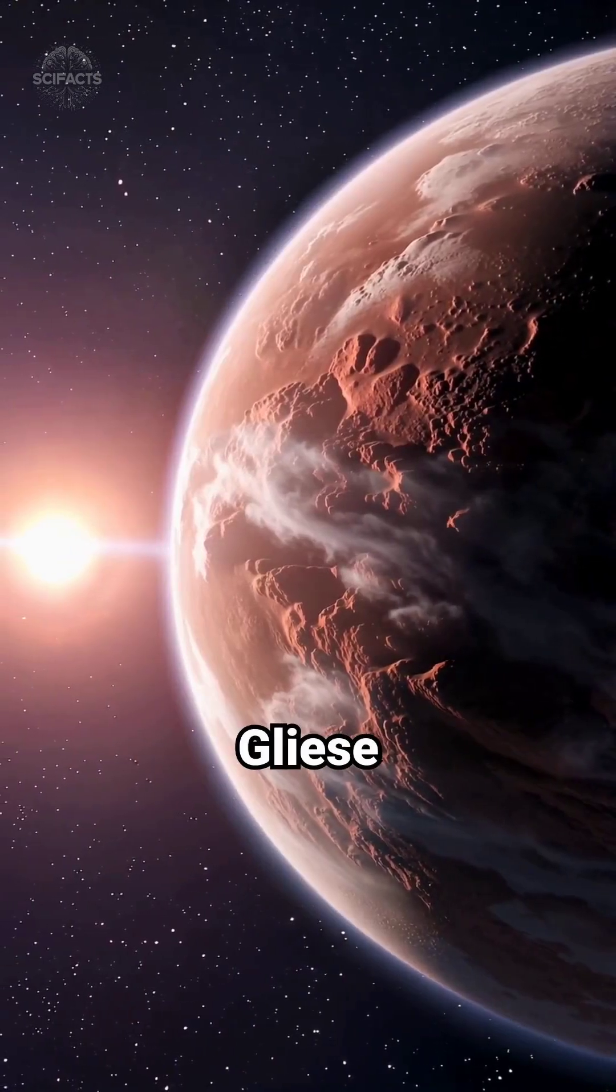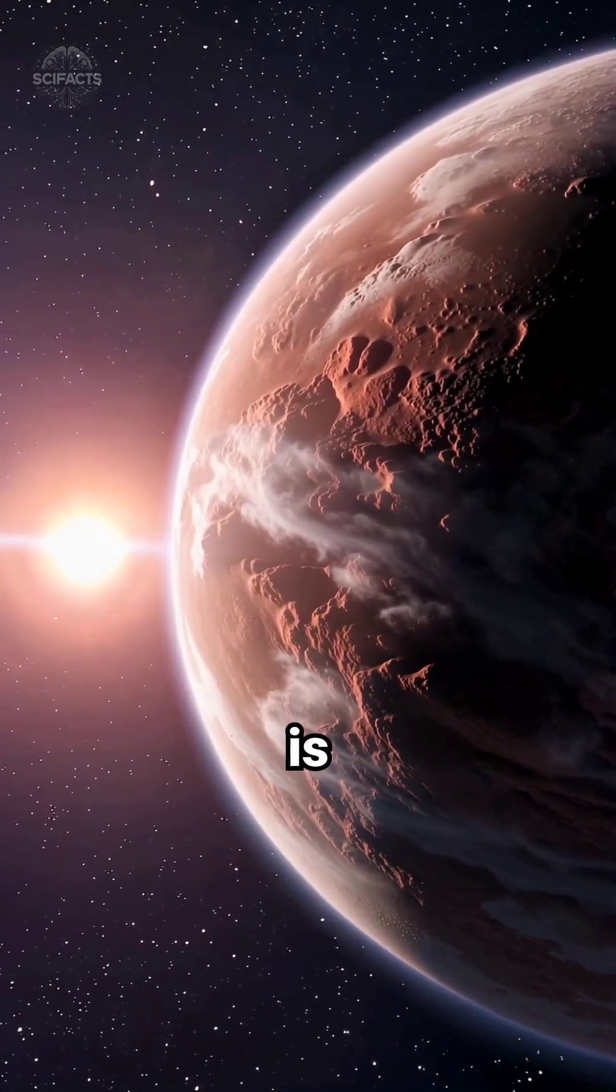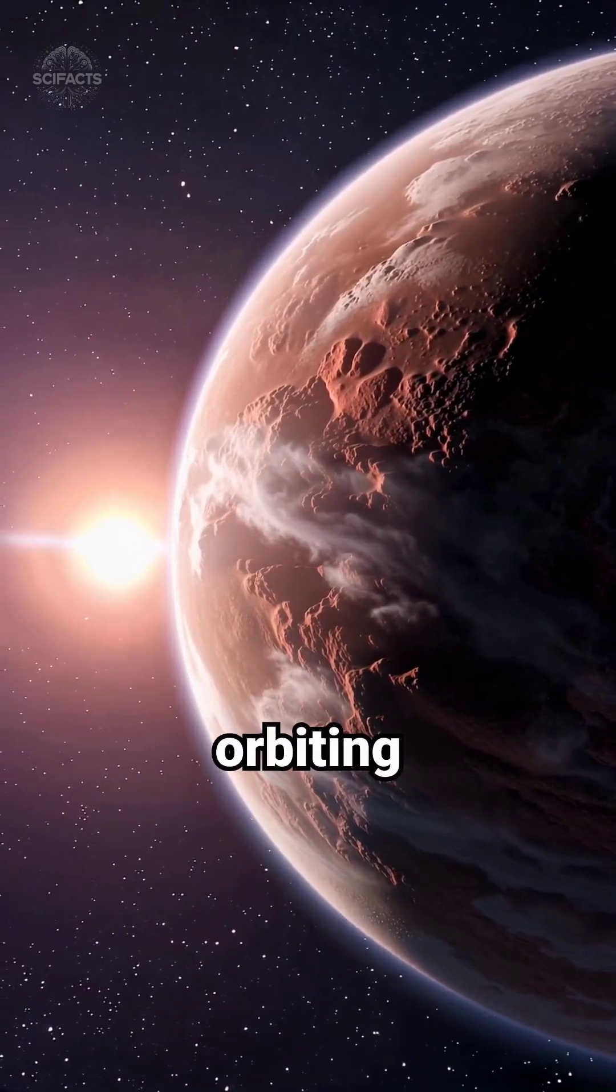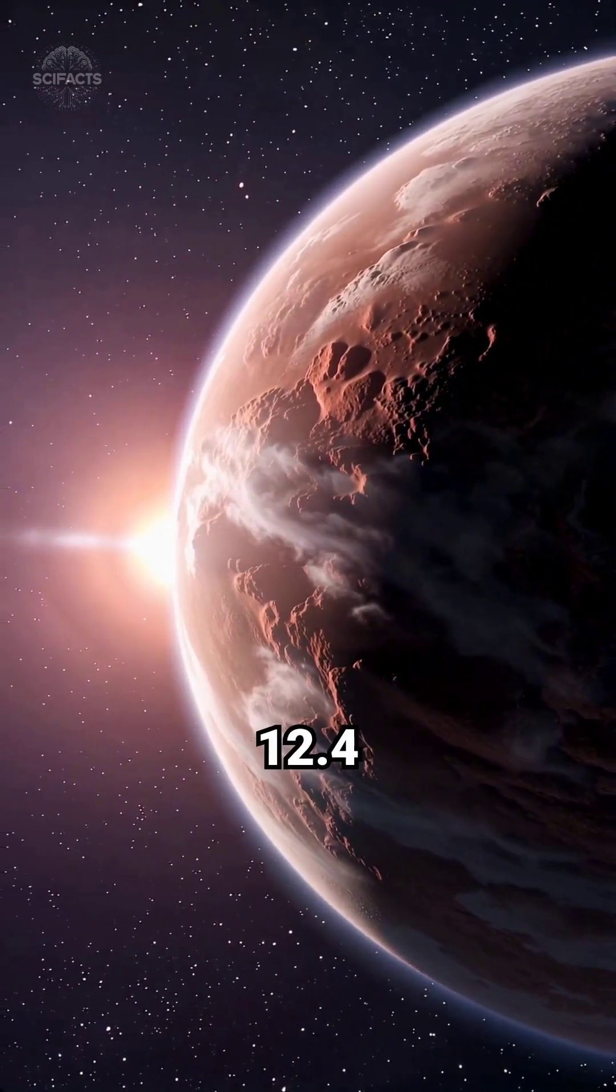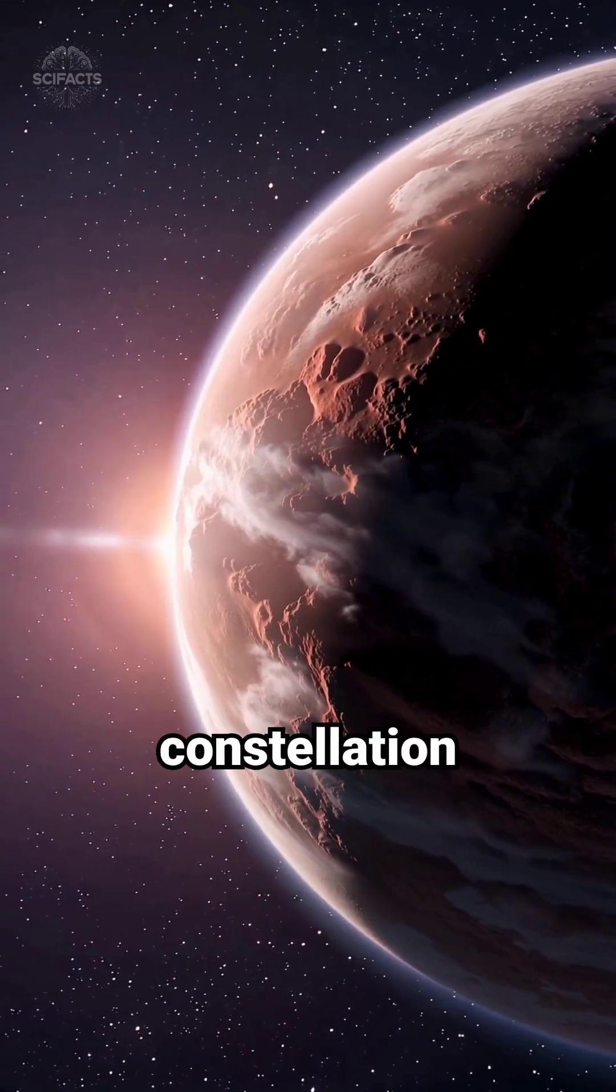Luyten b, also known as Gliese 273b, is an intriguing exoplanet orbiting the red dwarf Luyten star, located 12.4 light-years away in the constellation Canis Minor.